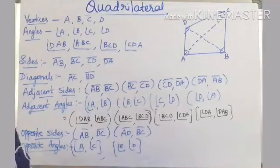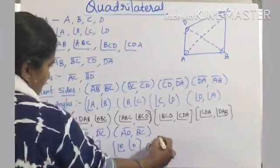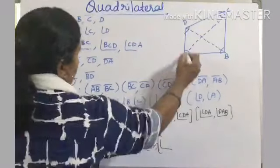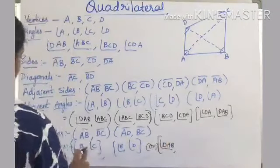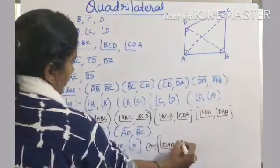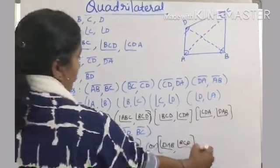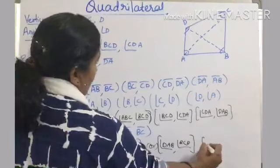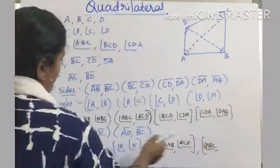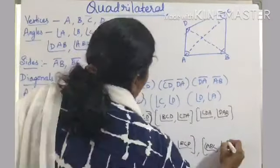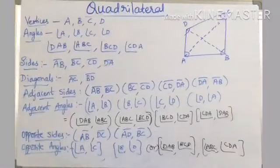You can write opposite angles with single letters or three letters. Angle A written as DAB is opposite to angle C written as BCD. Angle B written as ABC is opposite to angle D written as CDA. These are the opposite angles.